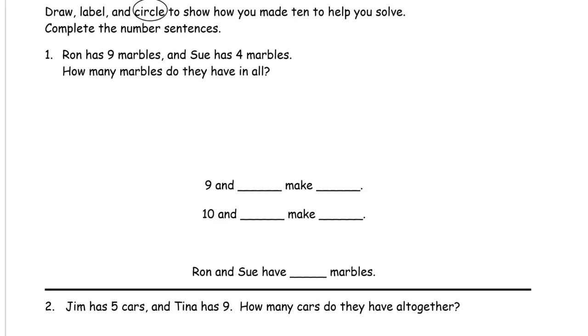You'll see what this looks like after the first example if you don't remember from class. Now before we were drawing to finish tens with three addends. Now we're going to have two addends and we're going to find a sneaky way to make ten with our picture. So Ron has nine marbles, Sue has four marbles. How many marbles do they have in all?